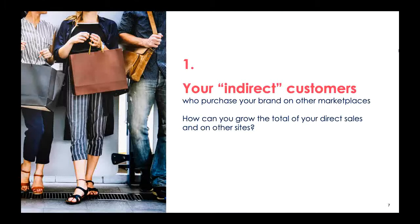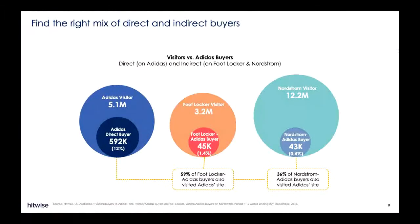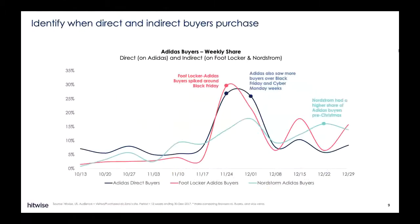We're going to explore the distinction between direct and indirect buyers with an example from Adidas. It starts with finding the right mix of direct and indirect buyers. The data shows us there's a sizable share of buyers visiting Adidas' site, but then buying on a different channel. 59% of Foot Locker Adidas buyers visited the Adidas site, and 36% of Nordstrom Adidas buyers did the same. So how can Adidas minimize this cannibalization of sales?